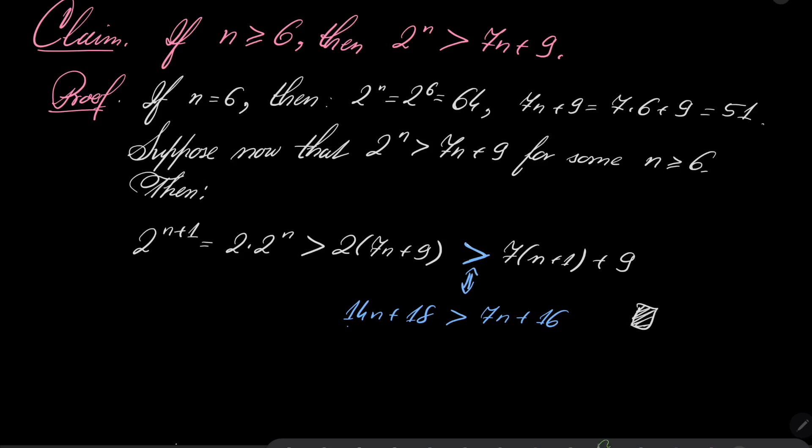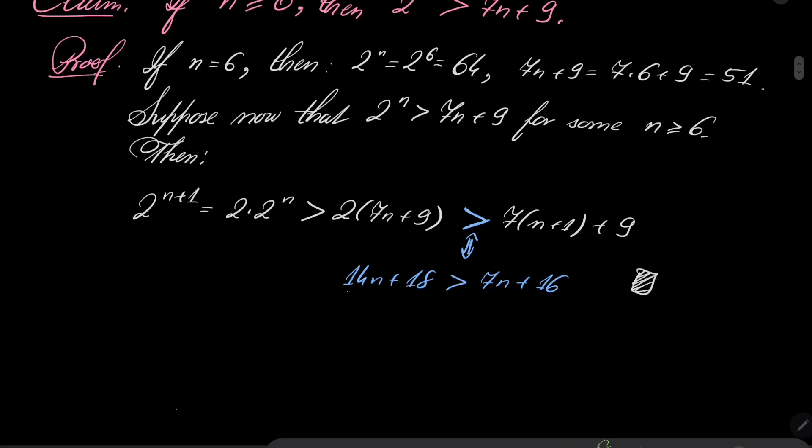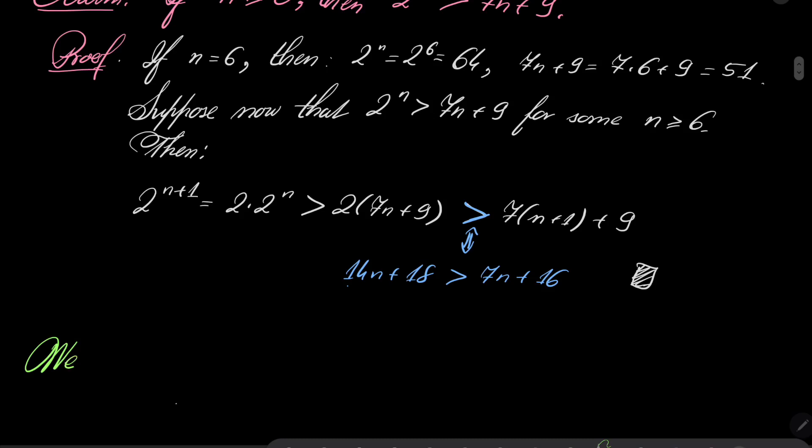Which means that we have to verify only n from 0 to 5.